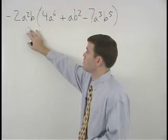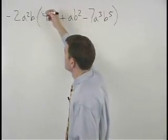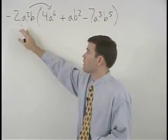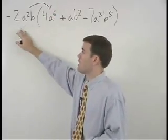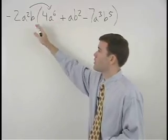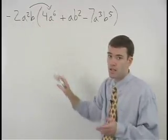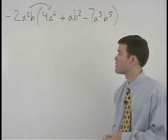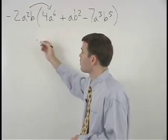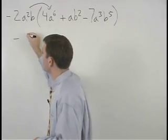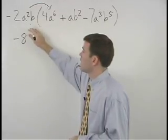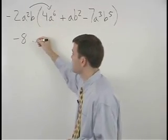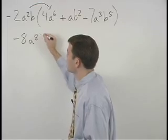So multiplying negative 2a squared b times 4a to the sixth, remember we can multiply our coefficients, but we must add the exponents on the like bases. This idea is called the product rule that we learned in the previous units. So we have negative 2 times 4 which is negative 8, and a squared times a to the sixth is a to the 2 plus 6 or a to the eighth b.